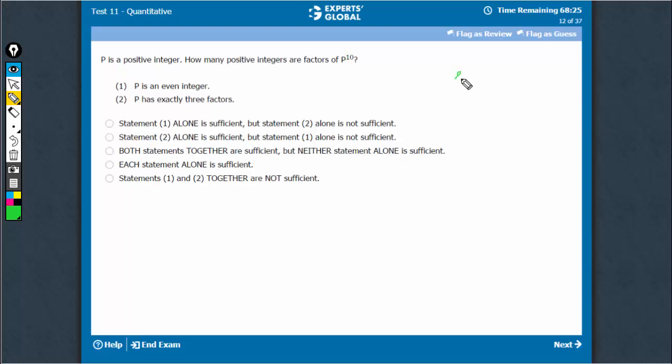P is an even integer. So, if 2 raised to power 10, if P were equal to 2, it would have only 11 factors.